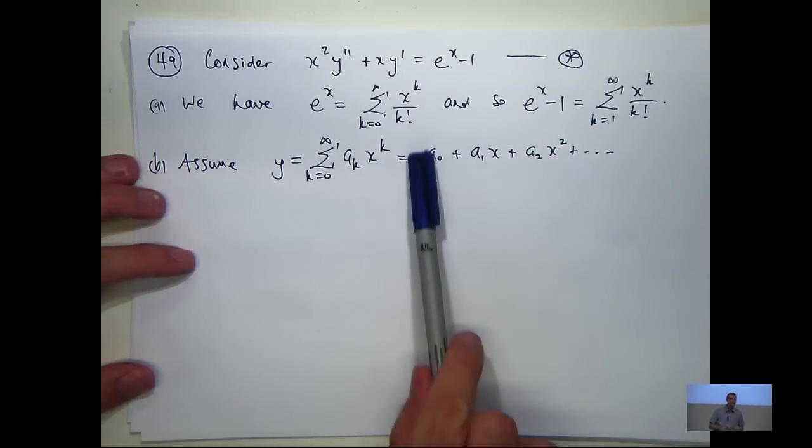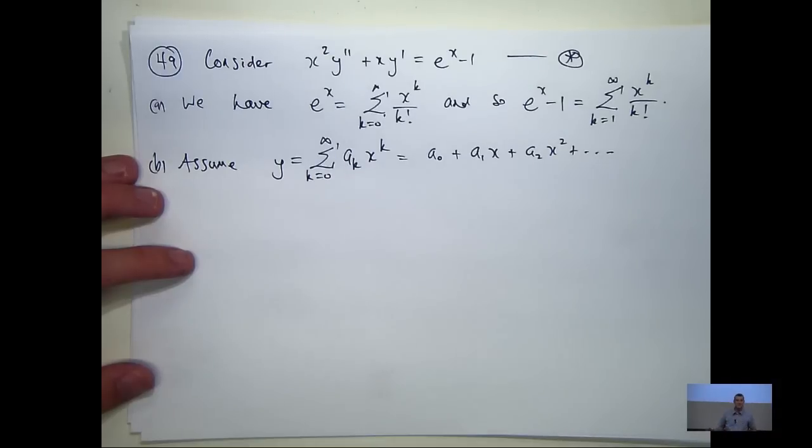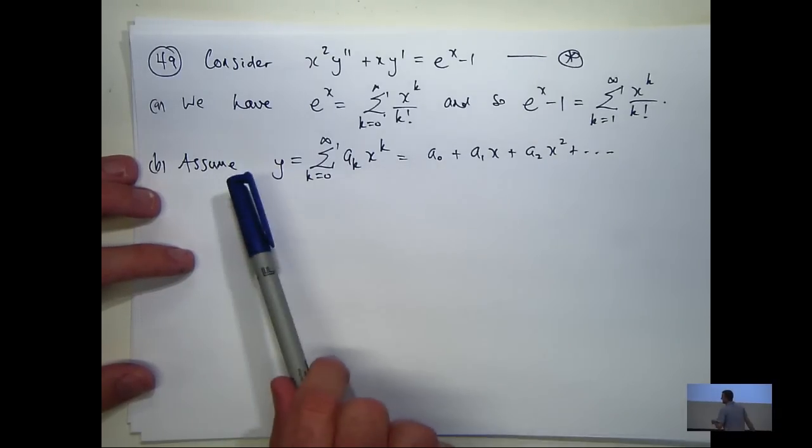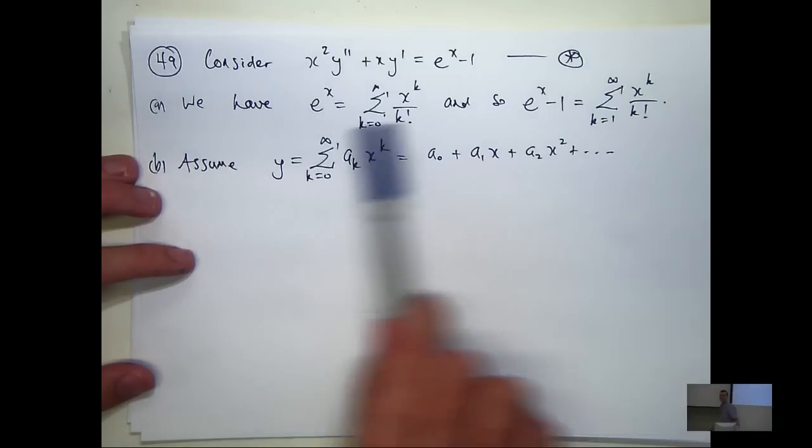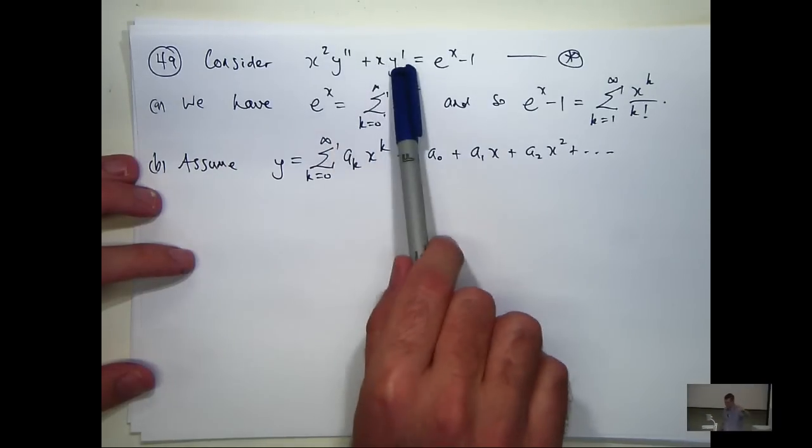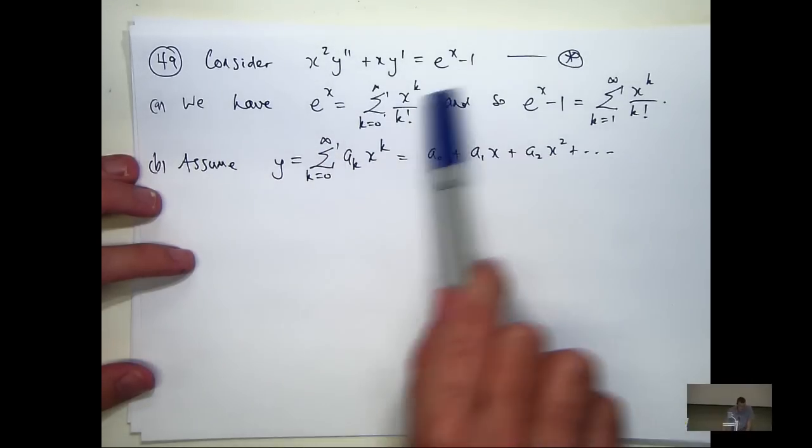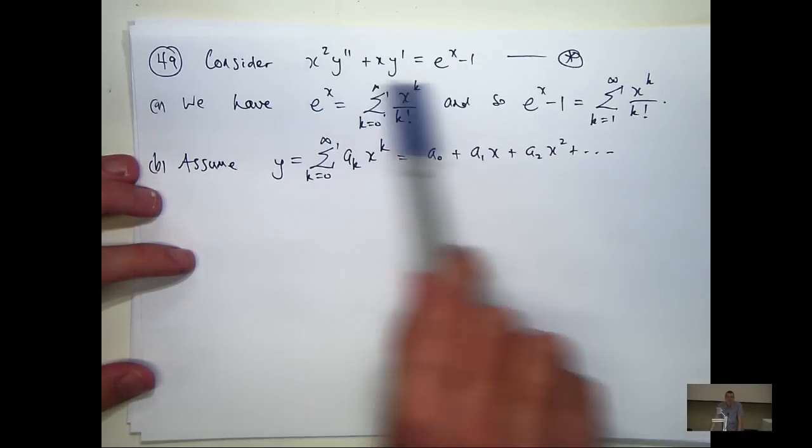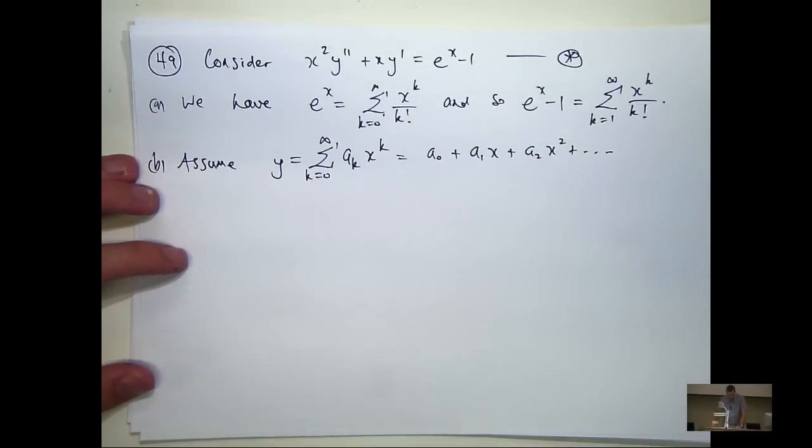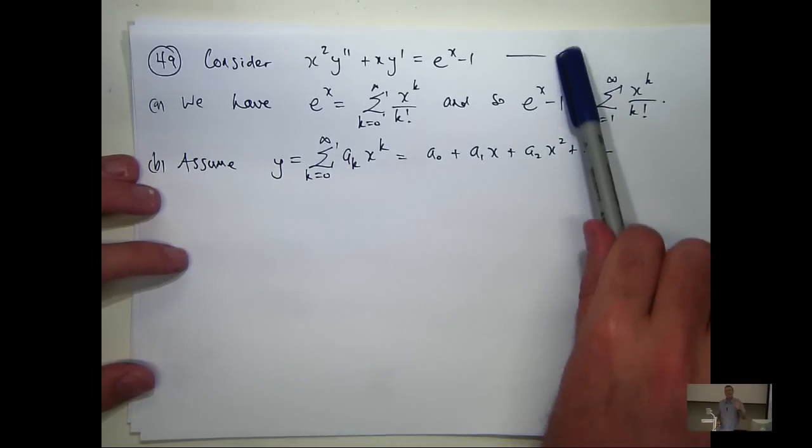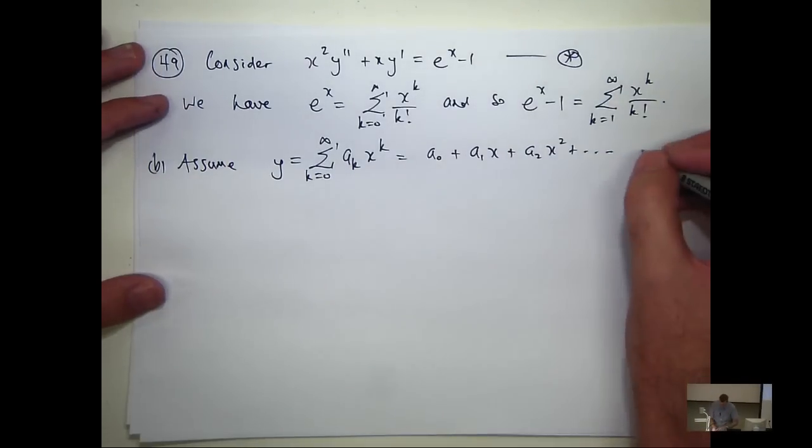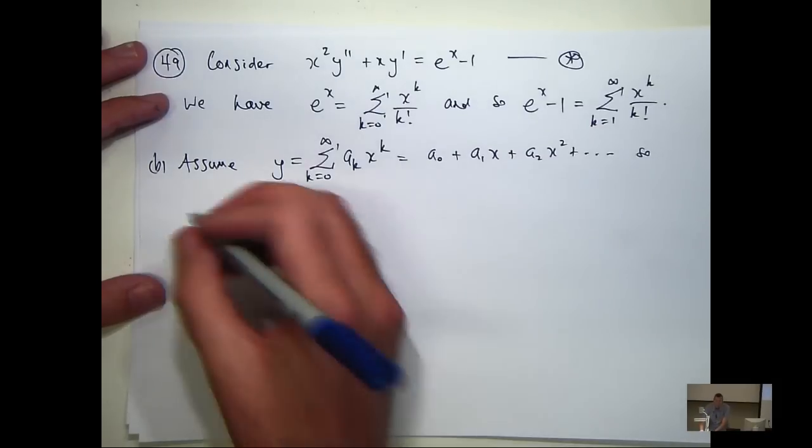So we're looking for A0, A1, A2, and so on. Now, what I'm going to do is take this general form of the solution, differentiate it once, twice, and sub it in, including my part in A, into this starred series. It's going to get a bit messy.